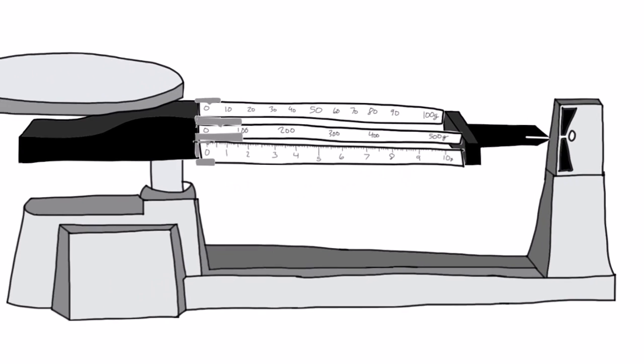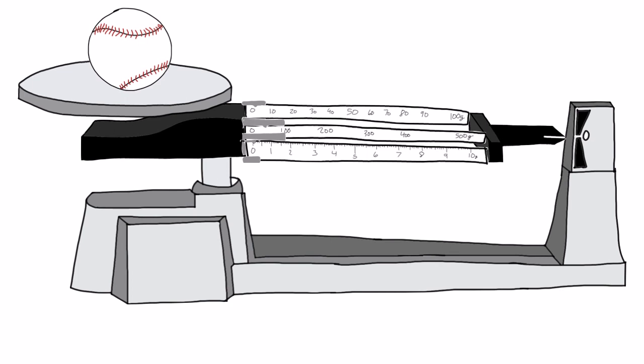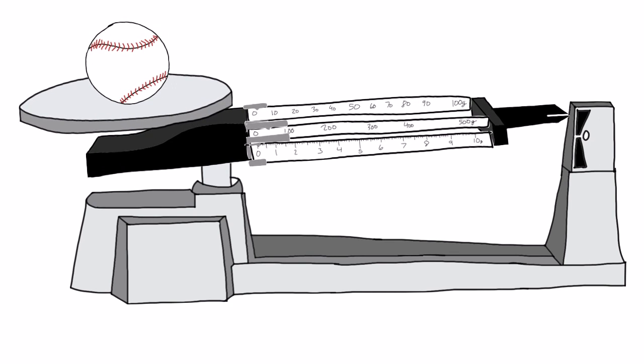Next, place the object on the pan. Notice the indicator will move up. Our goal is to get the indicator to line up back where it started.